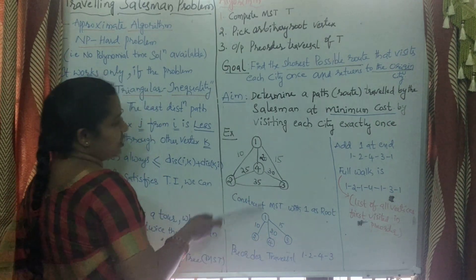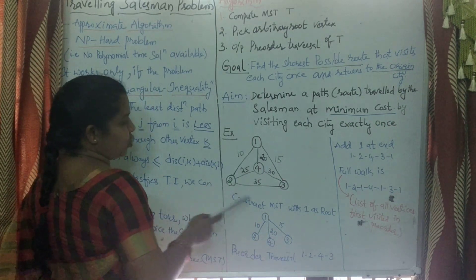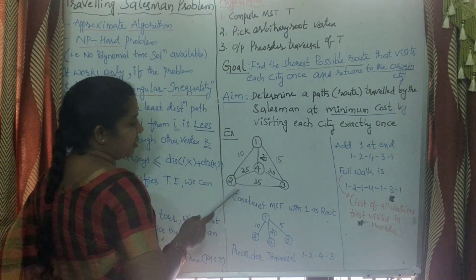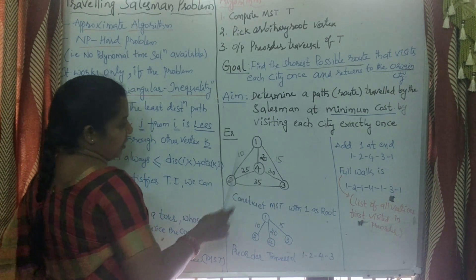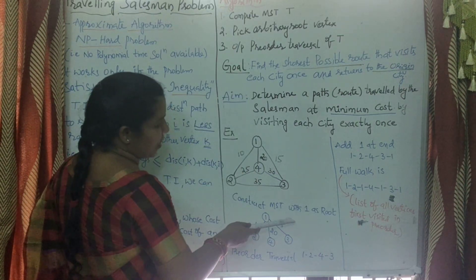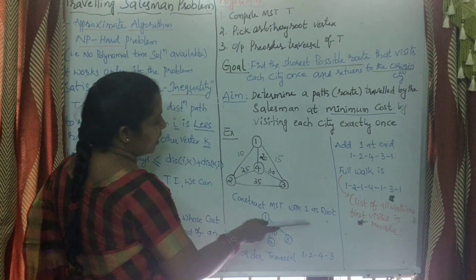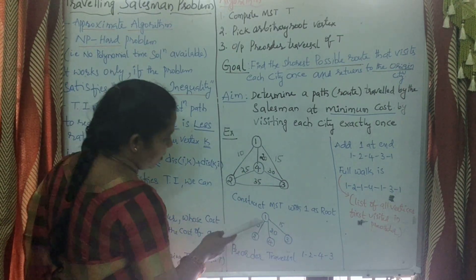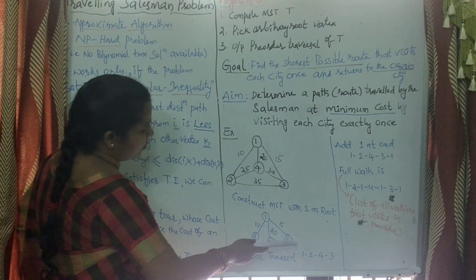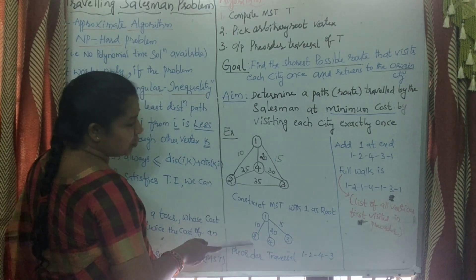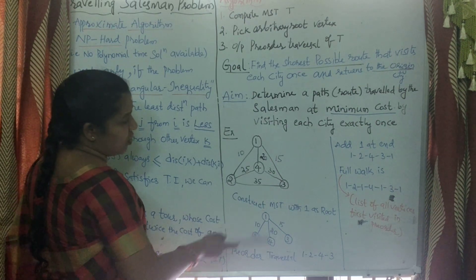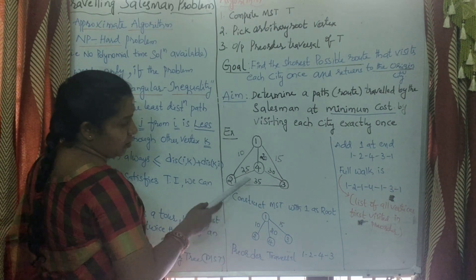For example, here we are taking four cities: 1, 2, 3, and 4. These are the distances for travelling from one city to another city. For this, first we have to construct the minimum spanning tree, taking vertex 1 as the root. The minimum spanning tree is the spanning tree whose cost is the minimum.